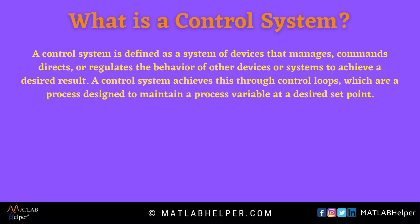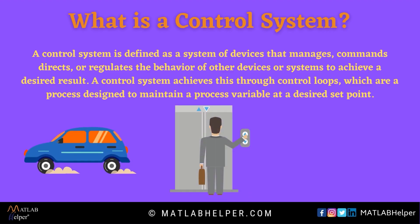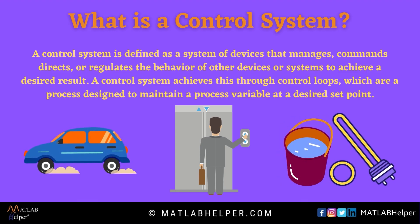Let us start from the basics. What is a control system? A control system is a machine or equipment that gives us an output based on our input. Almost everything we see around us is an example of a control system. A car running at a speed of 100 km per hour or a lift inside a building can be considered a control system. By giving the input as the accelerator pedal or the push of a button, we can go to the desired speed and the desired floor respectively. Like an immersion water heater, even the simplest things are examples of a control system.